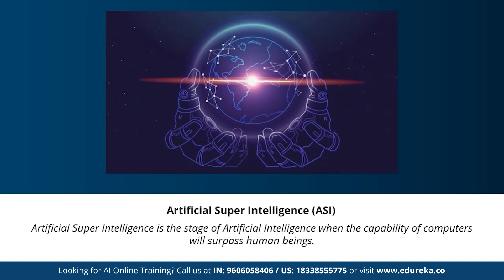Moving on to our last stage: artificial super intelligence. Artificial super intelligence is that stage of AI when the capability of computers will surpass human beings. It is currently seen as a hypothetical situation, as depicted in movies and science fiction books — those scenarios where machines are taking over the world. I believe machines are not very far from reaching this stage, given our current pace. However, such systems don't currently exist, and we don't have any machine capable of thinking or reasoning better than a human being.